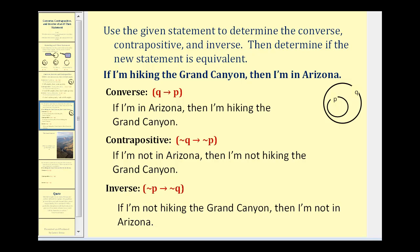Now let's take a look at a second example. Here we want to use the given statement to determine the converse, contrapositive, and inverse, and then determine if the new statement is equivalent, and also determine if it would be true or false. The given statement is: if I'm hiking in the Grand Canyon, then I'm in Arizona. The Grand Canyon is one of the largest tourist attractions located in Arizona, and it's also a national landmark. So if I'm hiking the Grand Canyon could be modeled by circle P, and if I'm in Arizona would be modeled by circle Q. Notice how it's possible to be in Arizona but not be hiking the Grand Canyon, meaning outside P but inside Q.